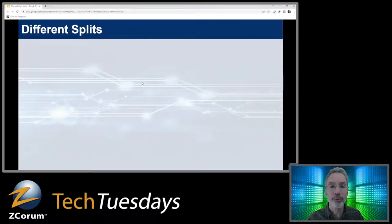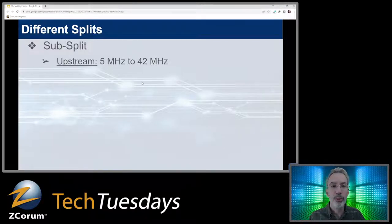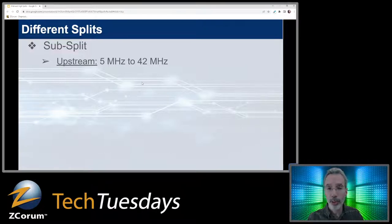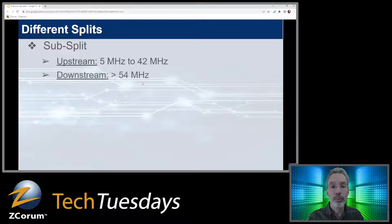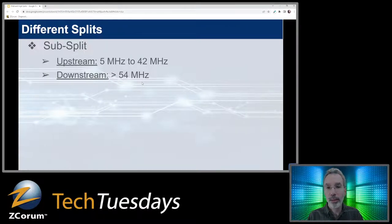Today we've got different kinds of splits. One of the first traditional splits was what's now called the sub split — upstream from 5 MHz to 42 MHz, which is the spectrum allocated for upstream traffic. Then on the downstream, starting at 54 MHz on up, depending on what they did with the plant. That gap in the middle from 42 to 54 MHz is your crossover zone where you're separating those two streams of upstream and downstream traffic with diplex filters.